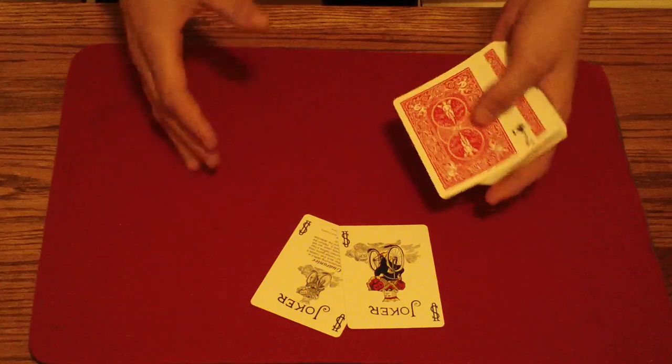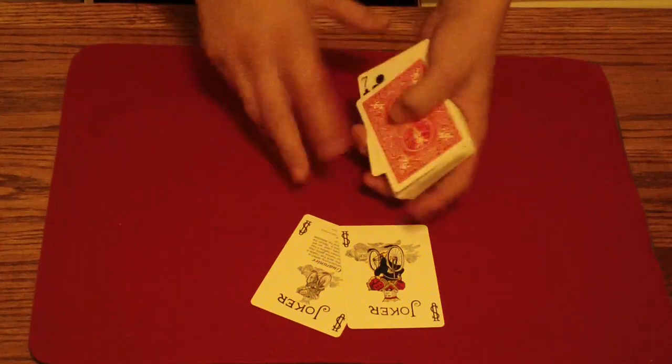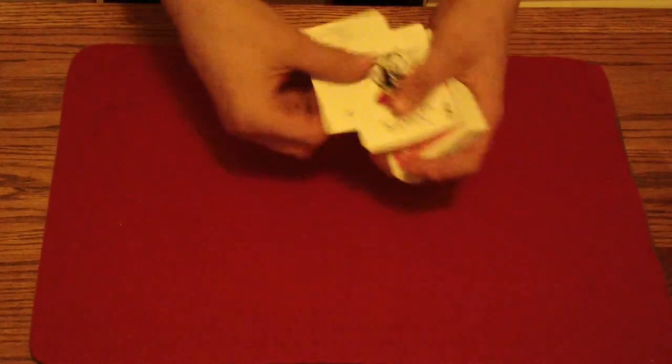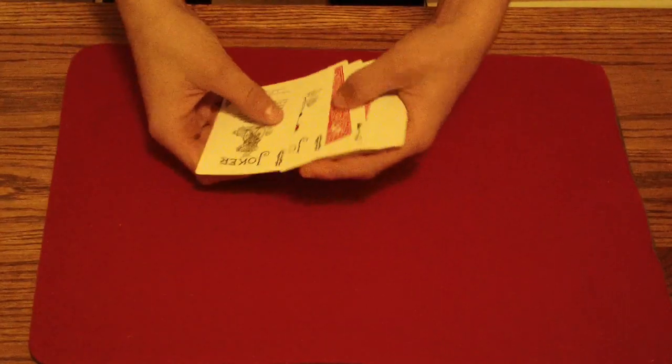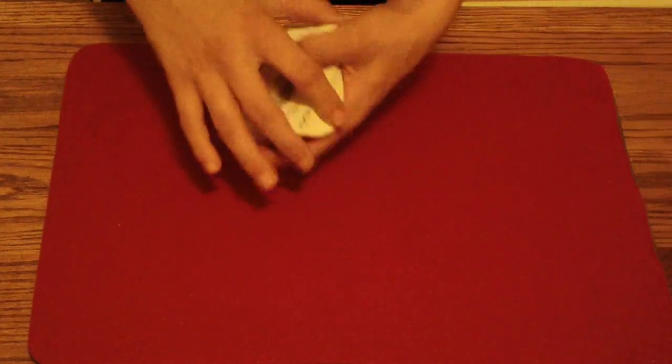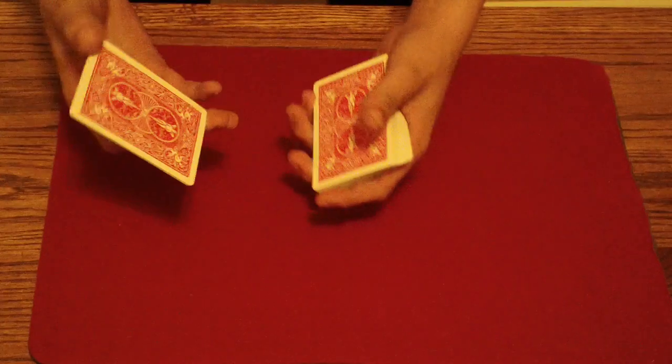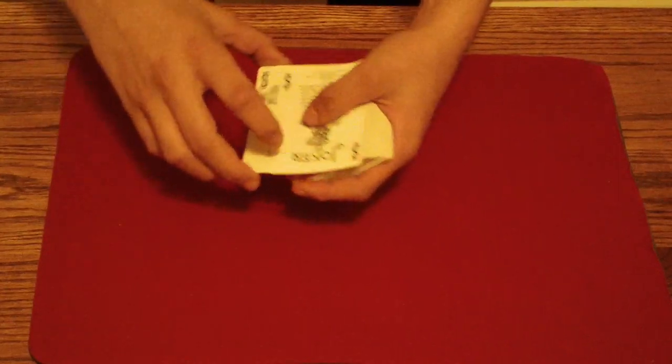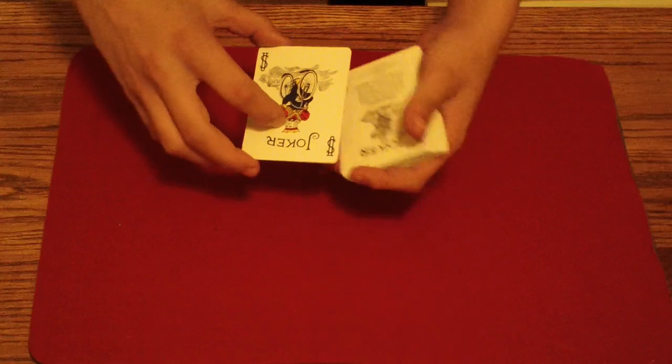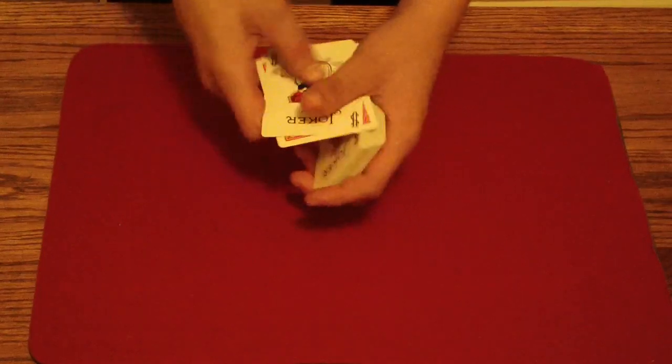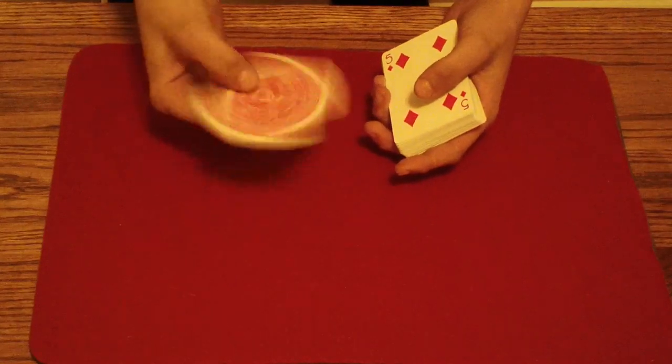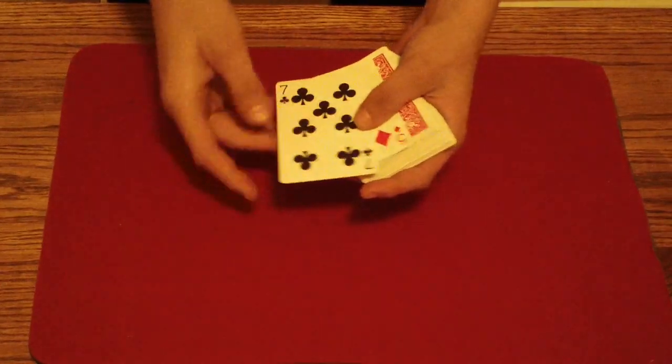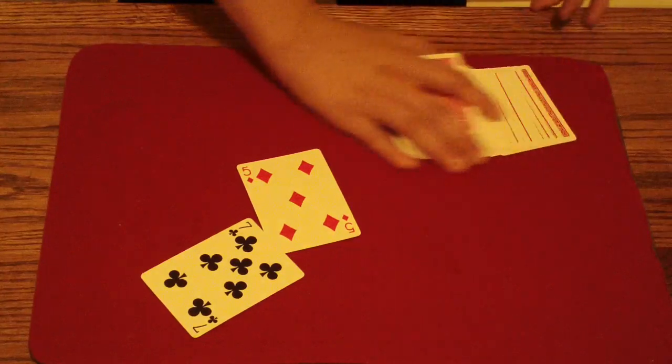And now what you're going to do is you need to get a break above these two, I mean under these two, and then you take the Jokers. And what you're going to do is you're going to take one Joker, you're going to still have the break under all four cards, and you're going to pick up all four, take one Joker, set it on, and flip all three cards on top. And then just snap, show, and they've changed into the two selections.